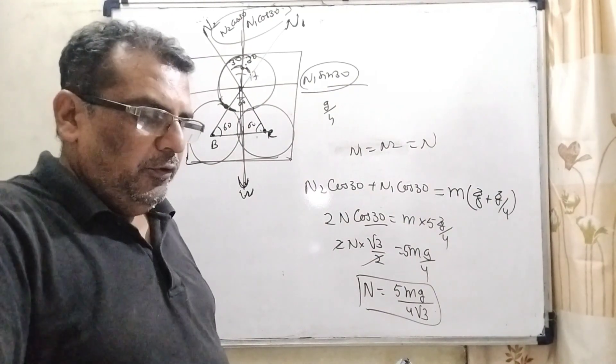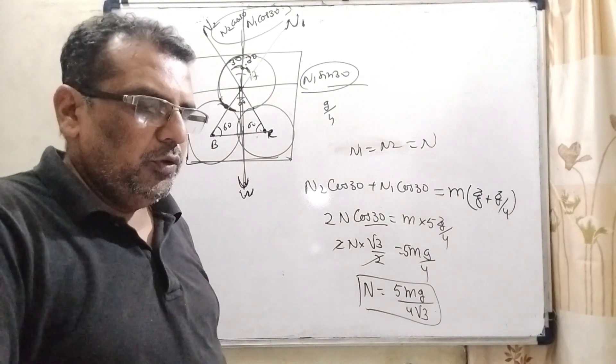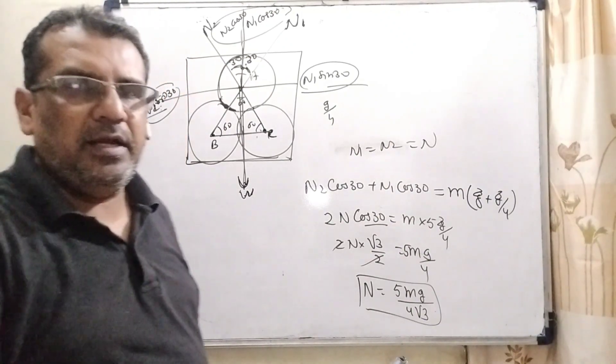That is the normal force between sphere A and B. So, therefore, that is 5 mg by 4 root 3, option D is correct. So, total correct answers are B and D.